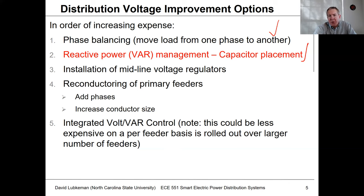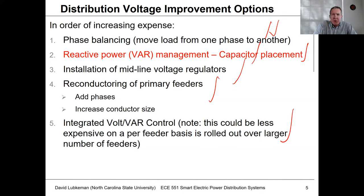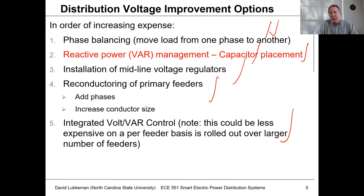If rebalancing or capacitor placement can't fix the issues, you look at voltage regulator placement, which we discussed previously. If that still doesn't fix everything, you put in larger conductors or upgrade from single-phase to two-phase or three-phase, which gets very expensive. The fifth option is integrated volt-VAR control, coordinating all capacitor banks and line regulators on a circuit — most expensive due to communications and computer system overhead, but cost-effective when implemented utility-wide.